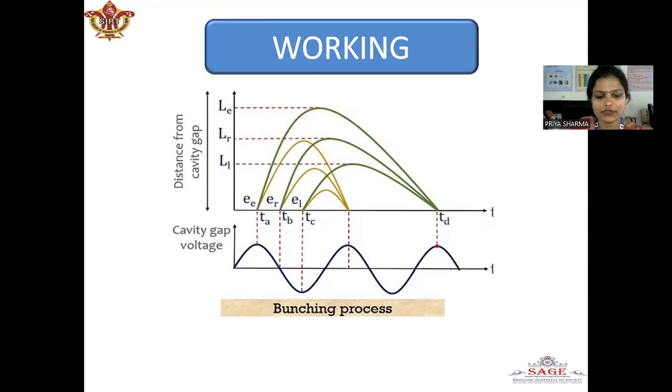The RF voltage that is produced across the gap by the cavity oscillations acts on the electron beam to cause velocity modulation. A reference electron which is denoted here by ER is the reference electron that passes through the gap when the gap voltage is zero and going negative.